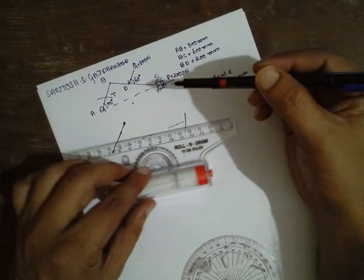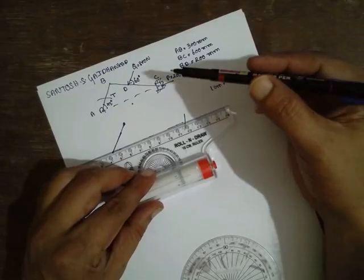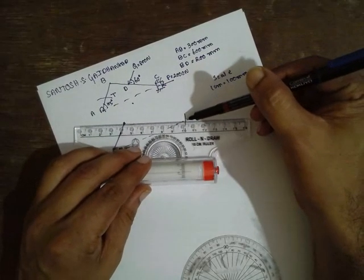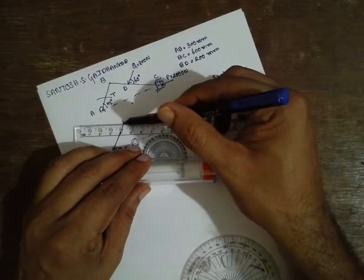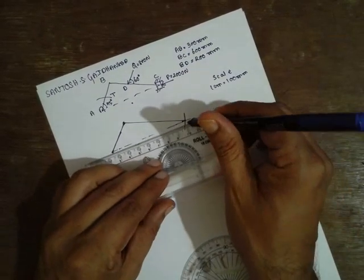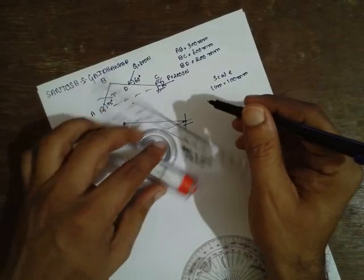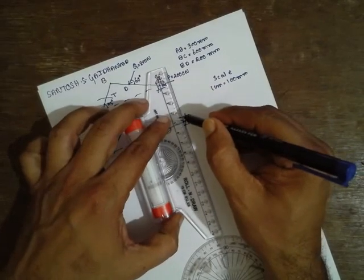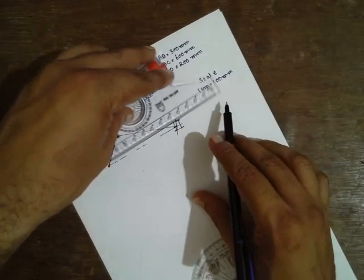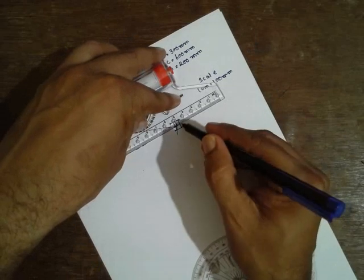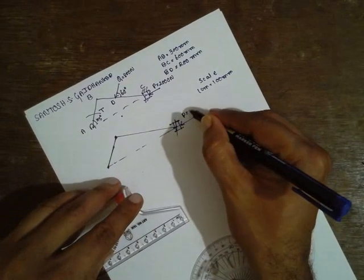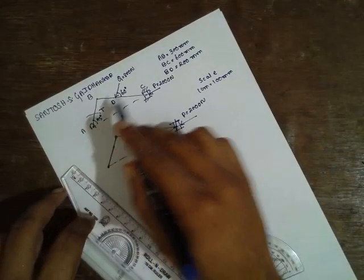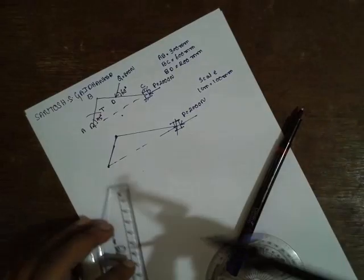We have to draw the piston. Join this part. Here the piston will be there. The force acts here. The P is equal to 2000 N. One more - BD is nothing but 200 mm, it is 2 cm.